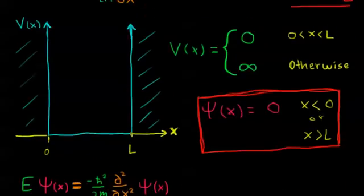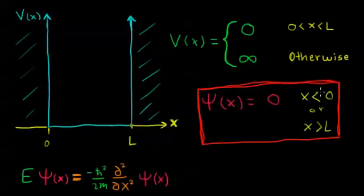Now let's use our boundary conditions to figure out what these constants are. Our first boundary condition is that at x less than zero, we know that the wave function is zero. The wave function is zero up to here, and then it's allowed to change and do whatever it will inside of this box.